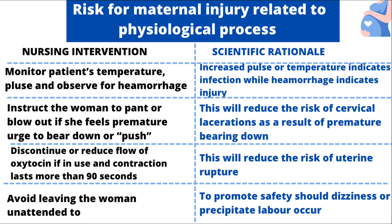Discontinue or reduce the flow of oxytocin if it is in use and contractions last more than 90 seconds. When the contraction is too strong, there is risk for uterine rupture, so this action reduces that risk. Finally, avoid leaving the woman unattended, to promote safety, as she may experience dizziness or precipitate labor may occur. Precipitate labor describes labor that lasts less than three to five hours of regular uterine contractions — a very fast labor. You need to be present to arrest any hemorrhage, resuscitate the baby if needed, and manage other processes such as separation via the umbilical cord.